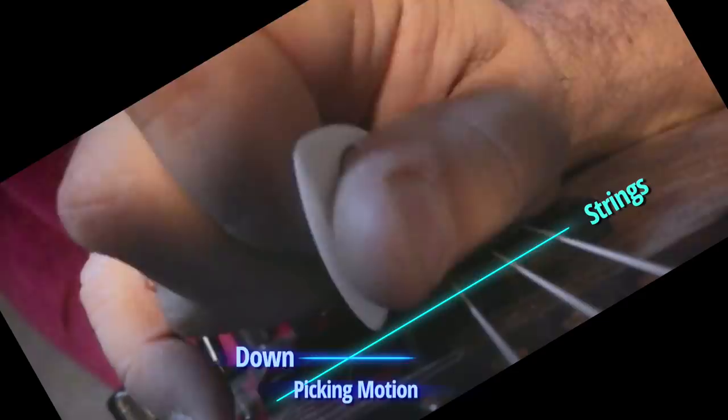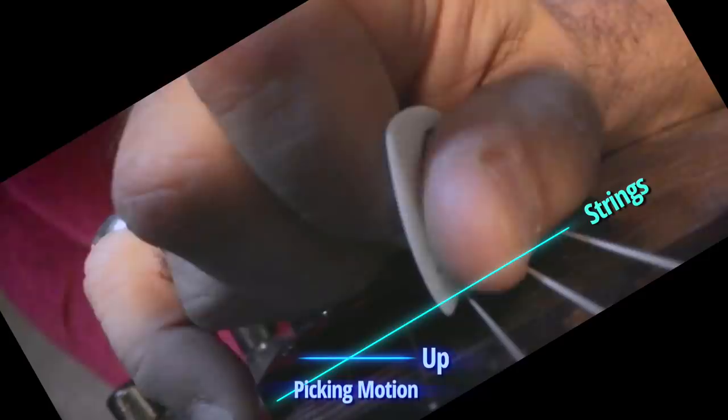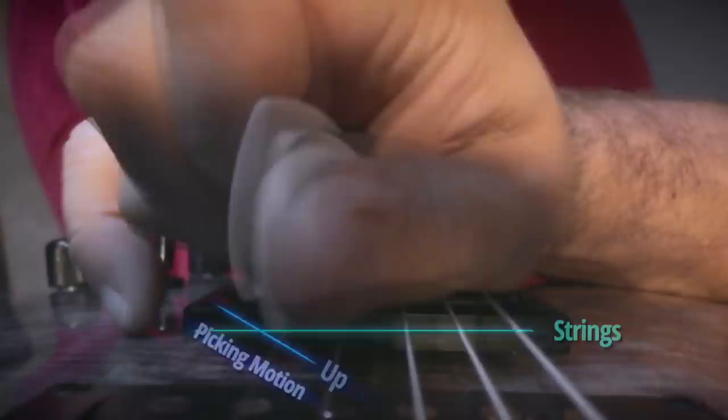So the purpose of pick slanting for alternate picking, amazingly, is to cancel out the effect of the diagonal picking motion. Even though the motion is slanted, the pick itself is also slanted just enough to get rid of the stickiness problem. And this is why we see pick slanting both during sweeping and during alternate picking.